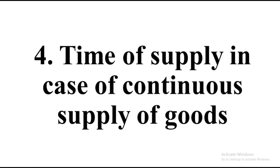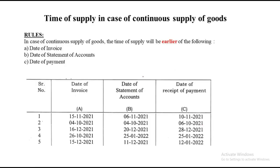Next: time of supply in case of continuous supply of goods. Whenever there is continuous supply of goods, you have to identify it from the column. When there is continuous supply of goods, the time of supply will be the earliest of: date of invoice, date of statement of account — this is the most important part — and date of payment. The moment you see 'date of statement of account,' remember it is continuous supply of goods. So now it is the earliest of three: date of invoice, date of statement of account, and date of receipt of payment — whichever is earliest will become your time of supply.